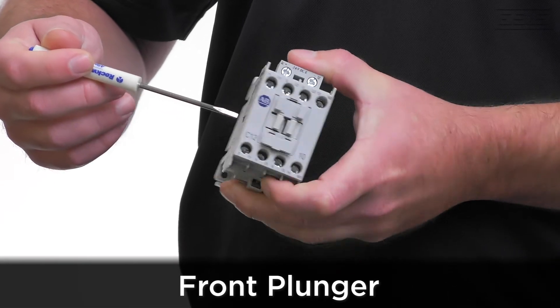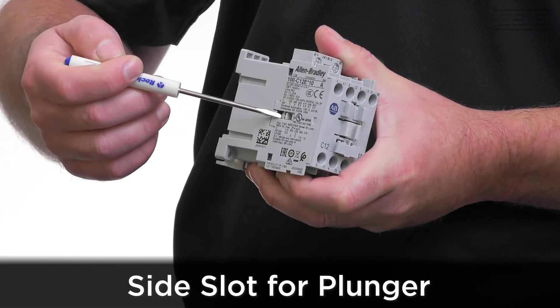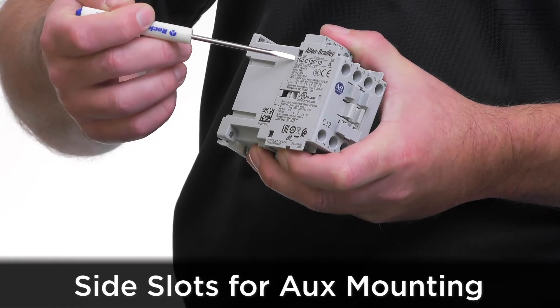If you're using side mount auxiliary contacts, then the plunger would interface on the slot on the side of the contactor. On each side, we have two additional slots where the AUX contacts would mount.